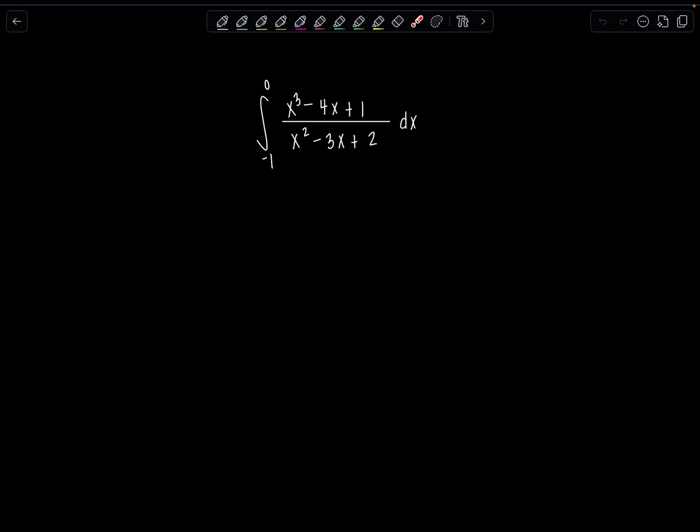Now notice here we have a rational function, and before we can start even thinking about finding partial fraction decomposition, notice we have to long divide because the degree of the denominator is not yet higher than the degree of the numerator. So step one, long divide.